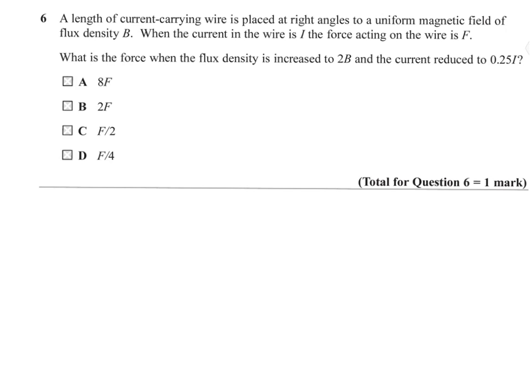Question 6. A length of current carrying wire is placed at right angles to a uniform magnetic field of flux density B. When the current in the wire is I, the force acting on the wire is F. What is the force when the flux density is increased to 2B and the current is reduced to 0.25I? Well, we've got a current carrying conductor at right angles. So, we can say that F is going to be BIL.